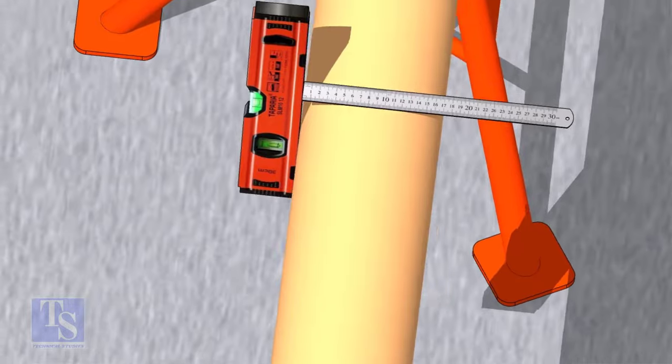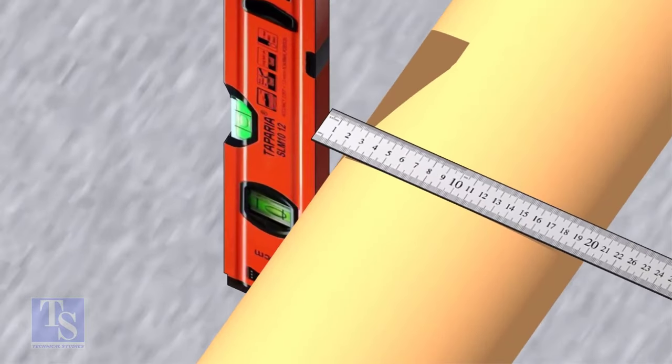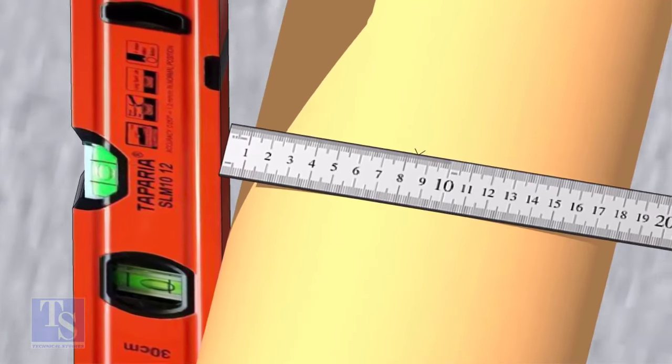OD of a six inch pipe is 168 millimeters, so mark the half OD, 84 millimeters, as shown.